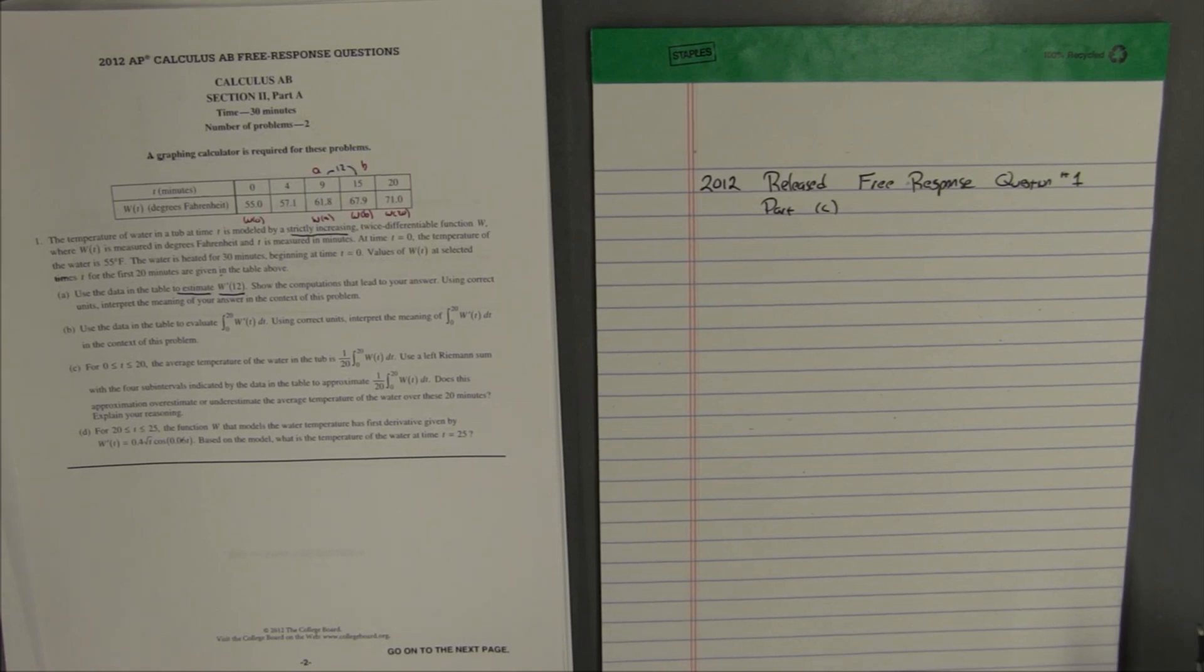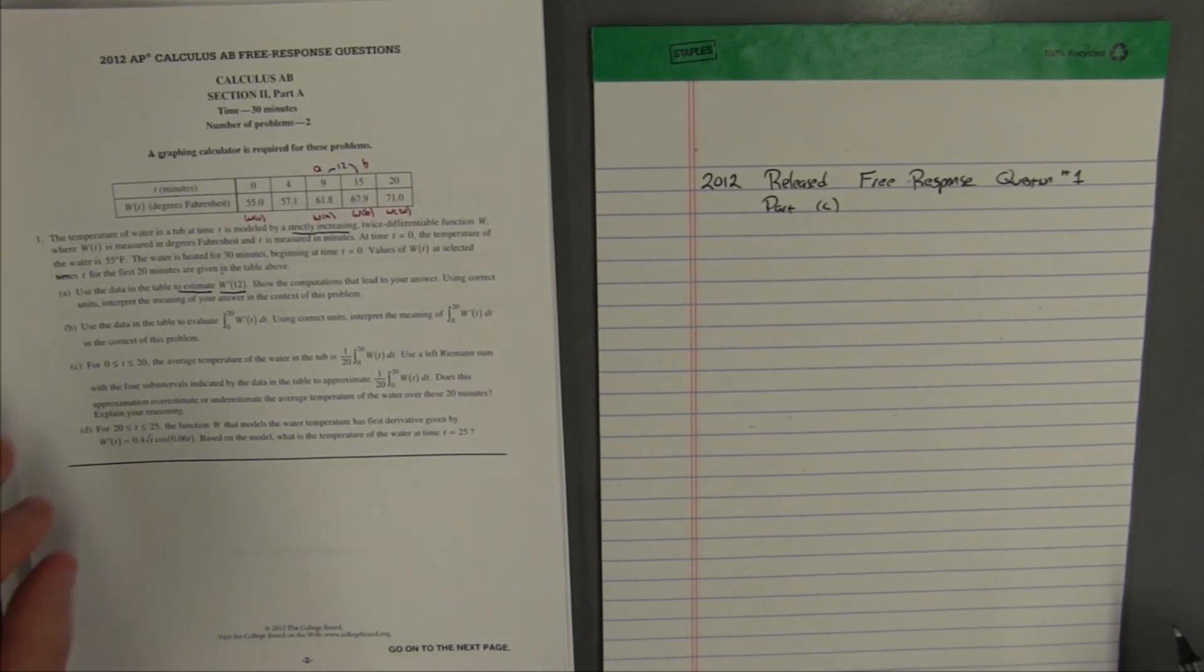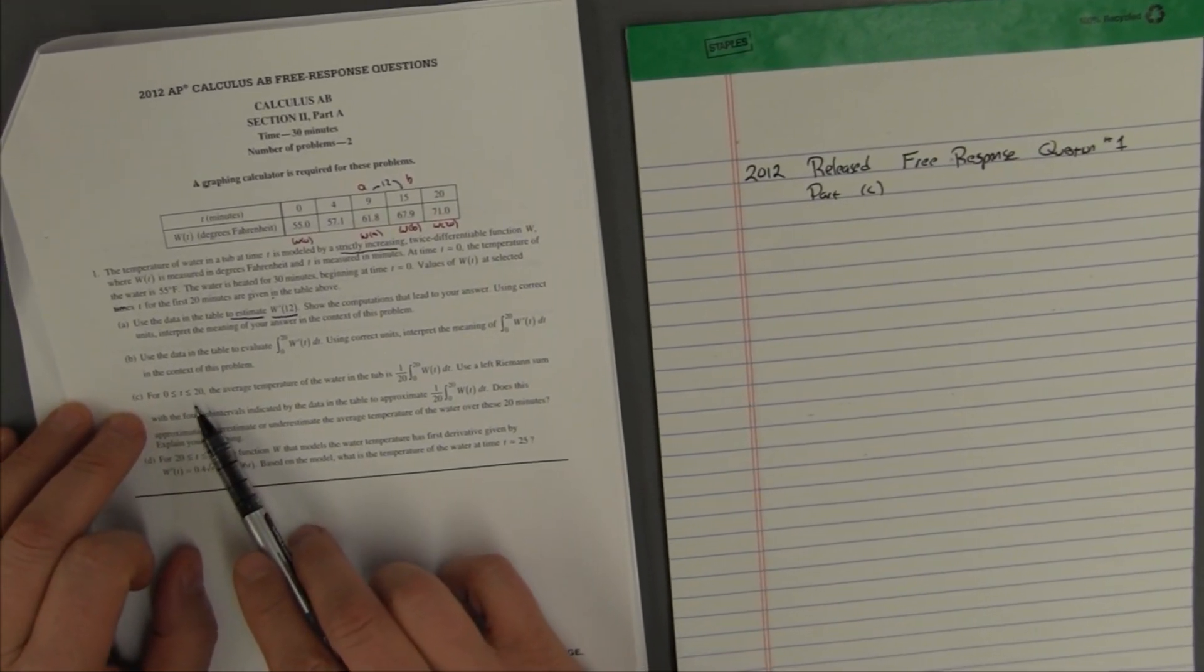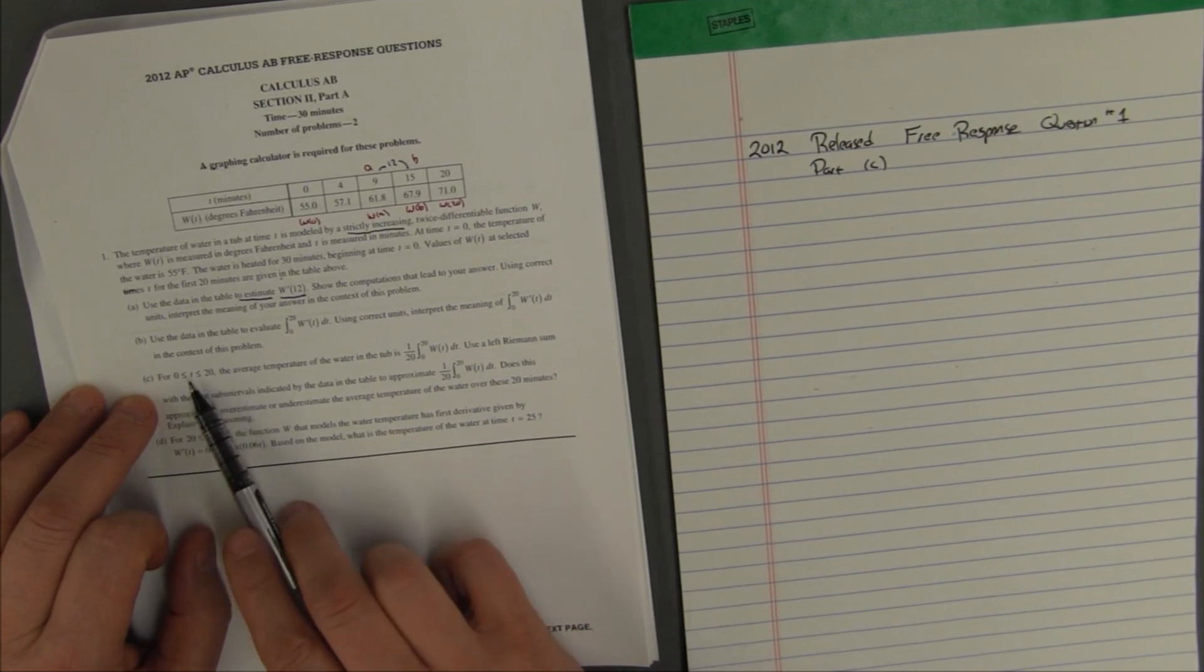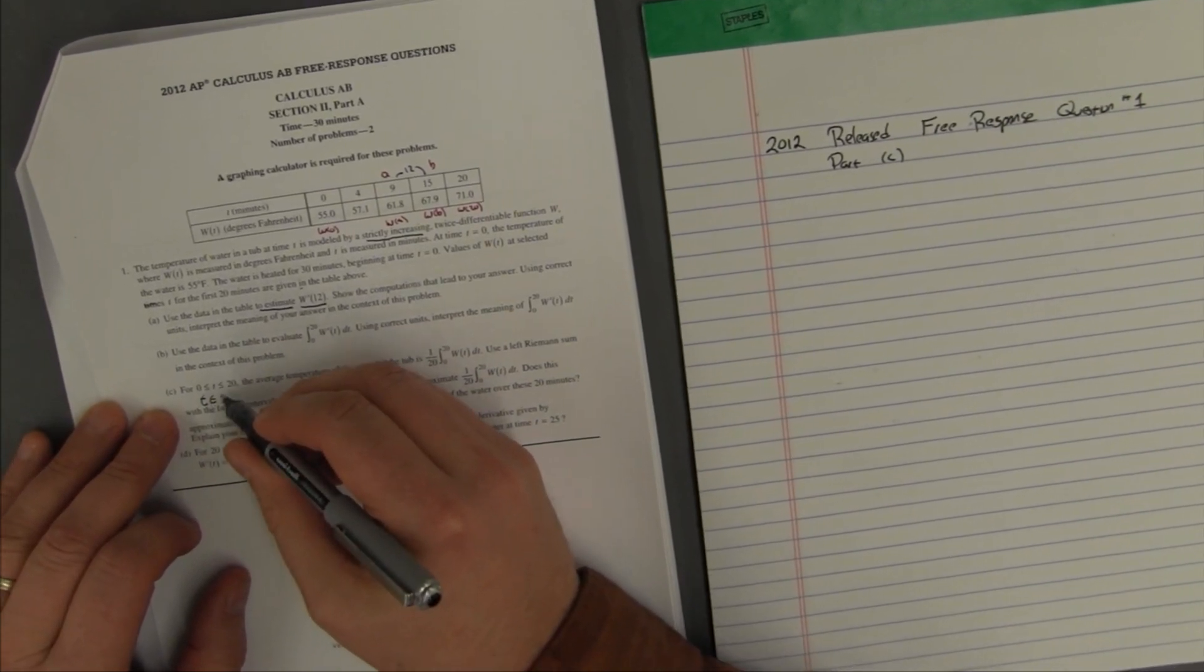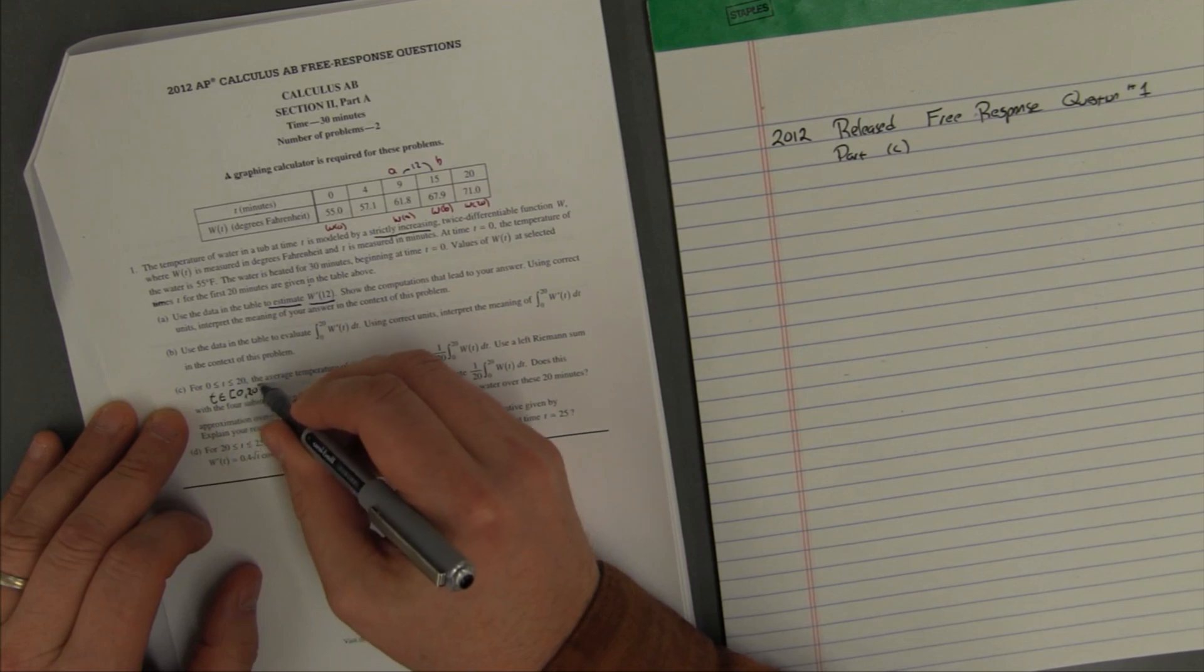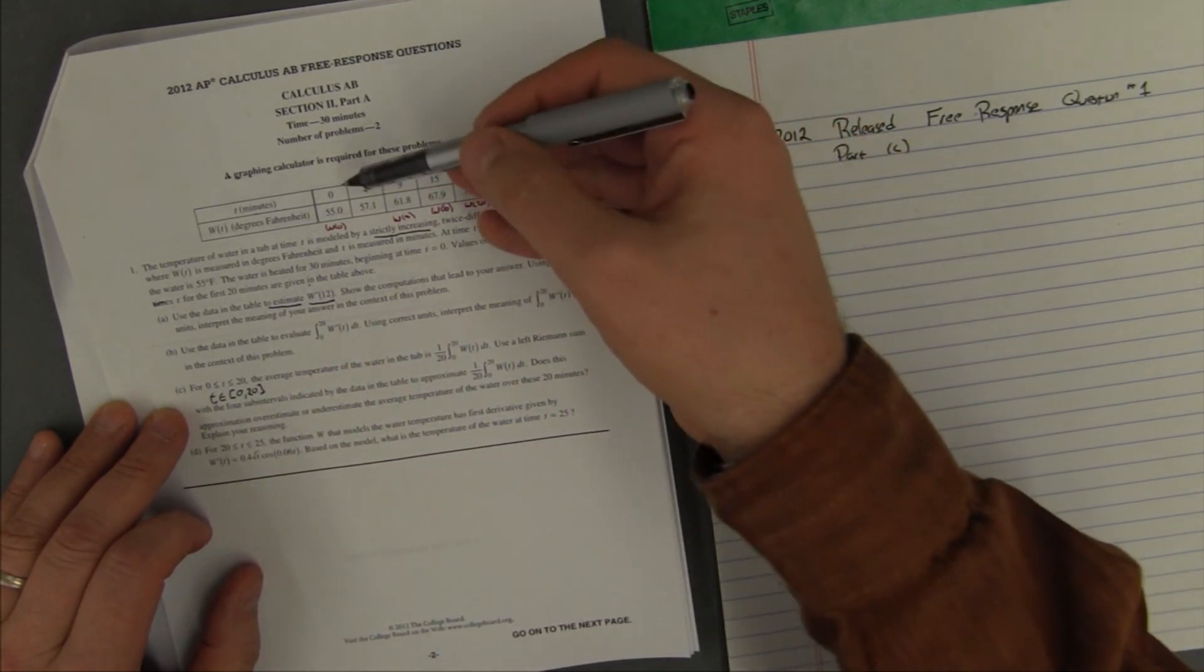Alright, so we're now doing the 2012 released free response question number one, part c. So the question says, for 0 less than or equal to t less than or equal to 20. When I see something like this, I don't read all the less than or equal to, I just look at this and say t is between 0 to 20, including the endpoints. In fact, a nice notation for that is to write t is an element of the closed interval from 0 to 20, and that's what they're really telling you. This is just the time domain of the problem.